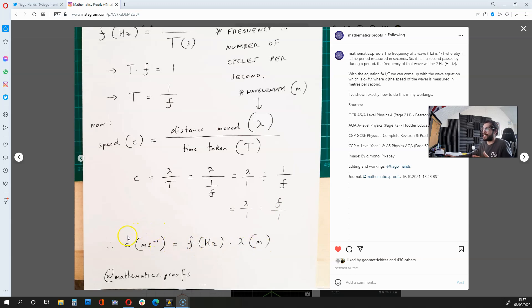Now, remember, c is measured as meters per second, the f is measured in hertz, and lambda is the wavelength measured in meters.